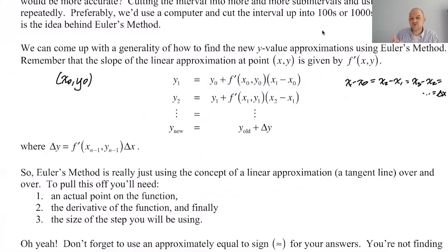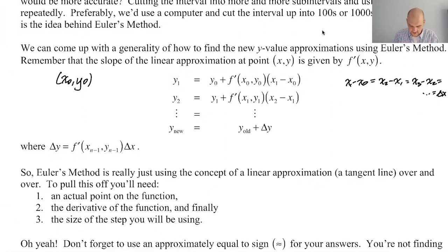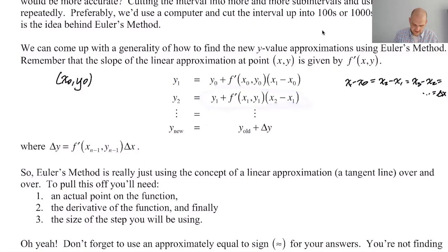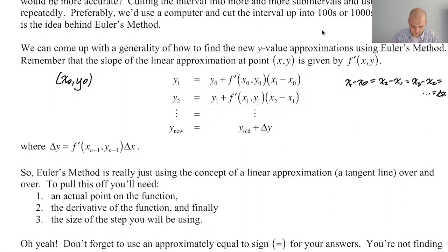So we're really just doing the original y value plus the derivative at the original point times delta x. That gives us y₁, and x₁ is just delta x away from x₀. Then you take those values, plug them in, and do a tangent line again. This is always delta x. So to get a new y value: old y value plus the approximate change.